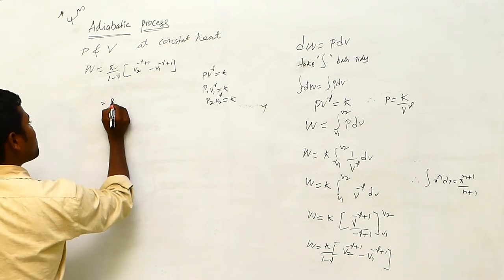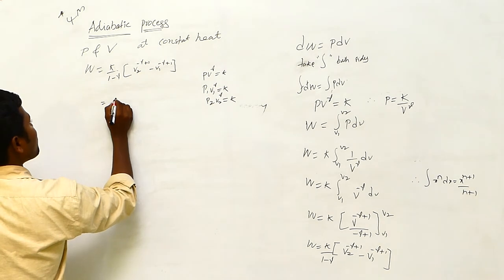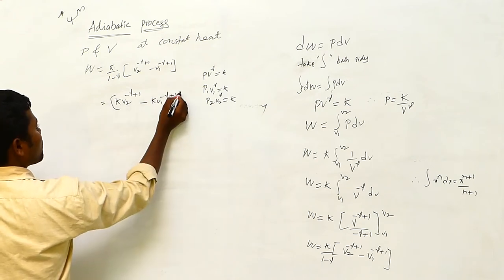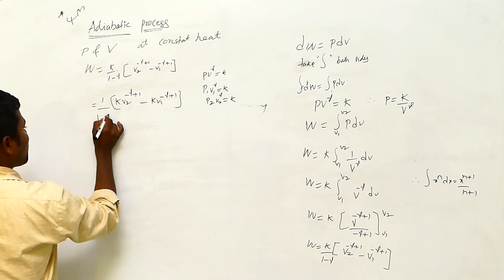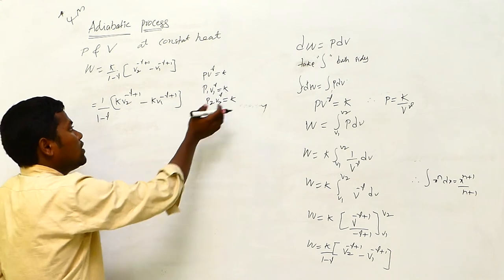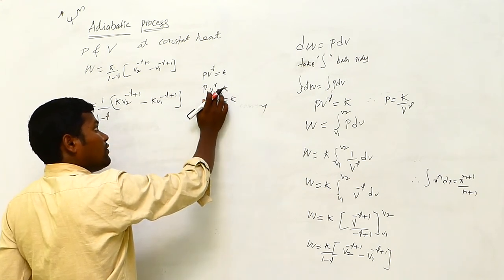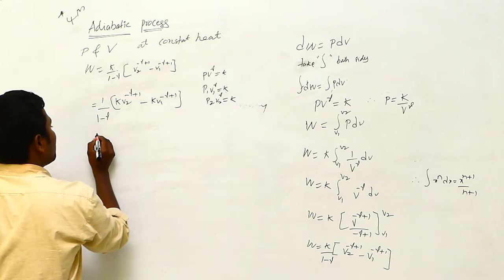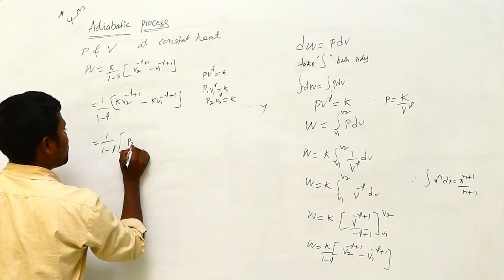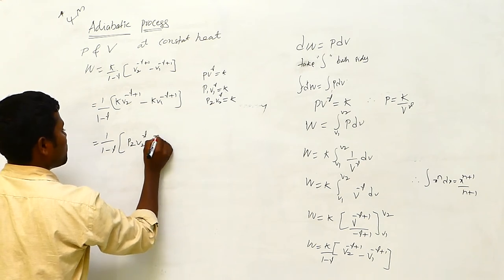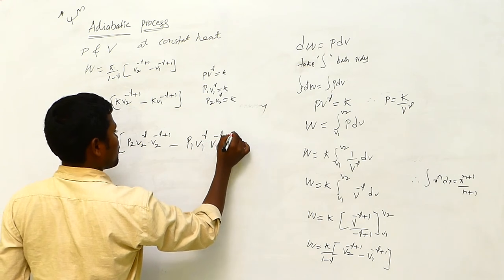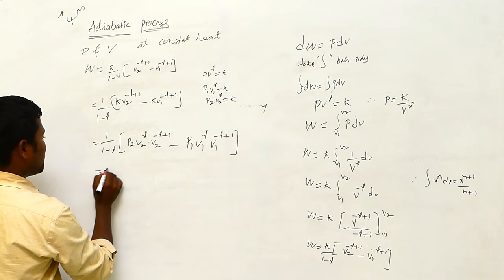Inside the bracket, first multiply. We get K times V2 to the power (minus gamma plus 1) equals P2 V2 to the power gamma times V2 to the power (minus gamma plus 1). The V2 terms cancel out. Similarly for V1. All divided by (1 minus gamma).